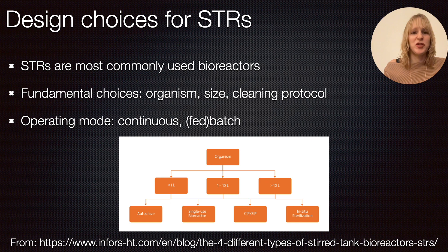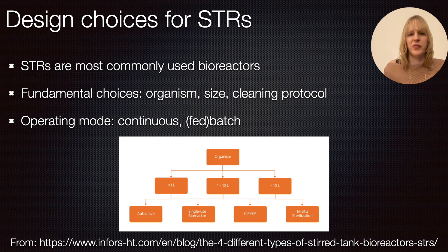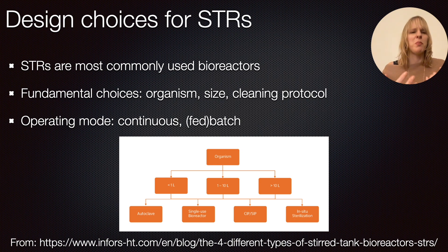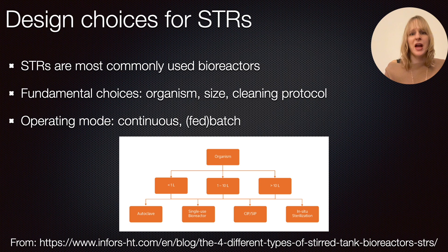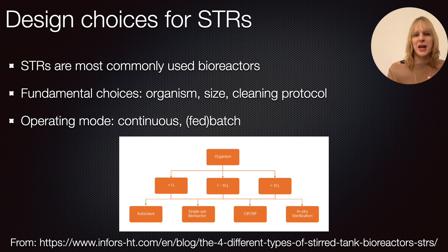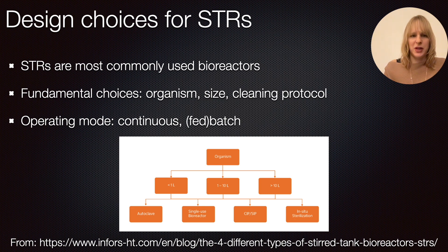There are different design choices for stirred tank bioreactors, which are the most commonly used ones and still the industry standard. The first thing you need to think about is what microorganism you're working with — for instance, bacteria that can withstand high shear and need a lot of oxygen, mammalian cell culture, or plant cells such as fungi. All of this will influence the choice of your design.